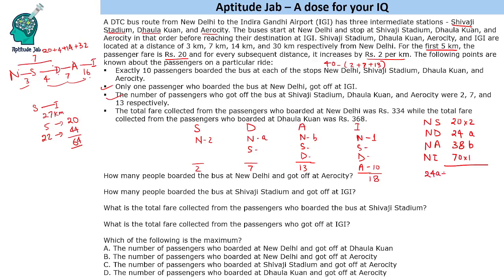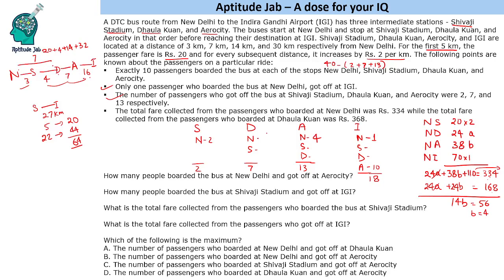So 24A + 38B + 110 = 334, giving 24A + 38B = 224. And A + B = 7, since total 10 people minus 3 known. Multiplying the second equation by 24: 24A + 24B = 168. Subtracting, we get 14B = 56, so B = 4. Then A = 3. So 3 people boarded at New Delhi and got off at Dholakunha.